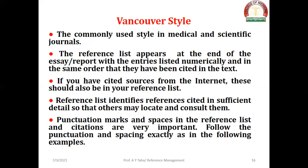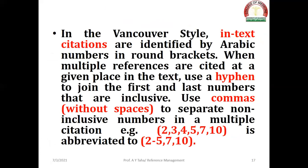Follow punctuation and spacing exactly as in the examples provided. In Vancouver style, in-text citations are identified by Arabic numbers in round brackets. When multiple references are cited at a given place, use a hyphen to join the first and last inclusive numbers, and use commas without spaces to separate non-inclusive numbers. For example, 2, 3, 4, 5, 7, 10 is abbreviated to 2–5, 7, 10.